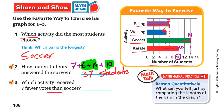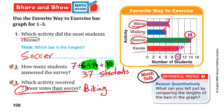Which activity received 7 fewer votes than soccer? Soccer has 14 students. Seven fewer means 14 minus 7, which is 7. Who has 7 votes? That's biking, so biking received 7 fewer votes than soccer. Hope you understand this lesson — have a nice day and goodbye!